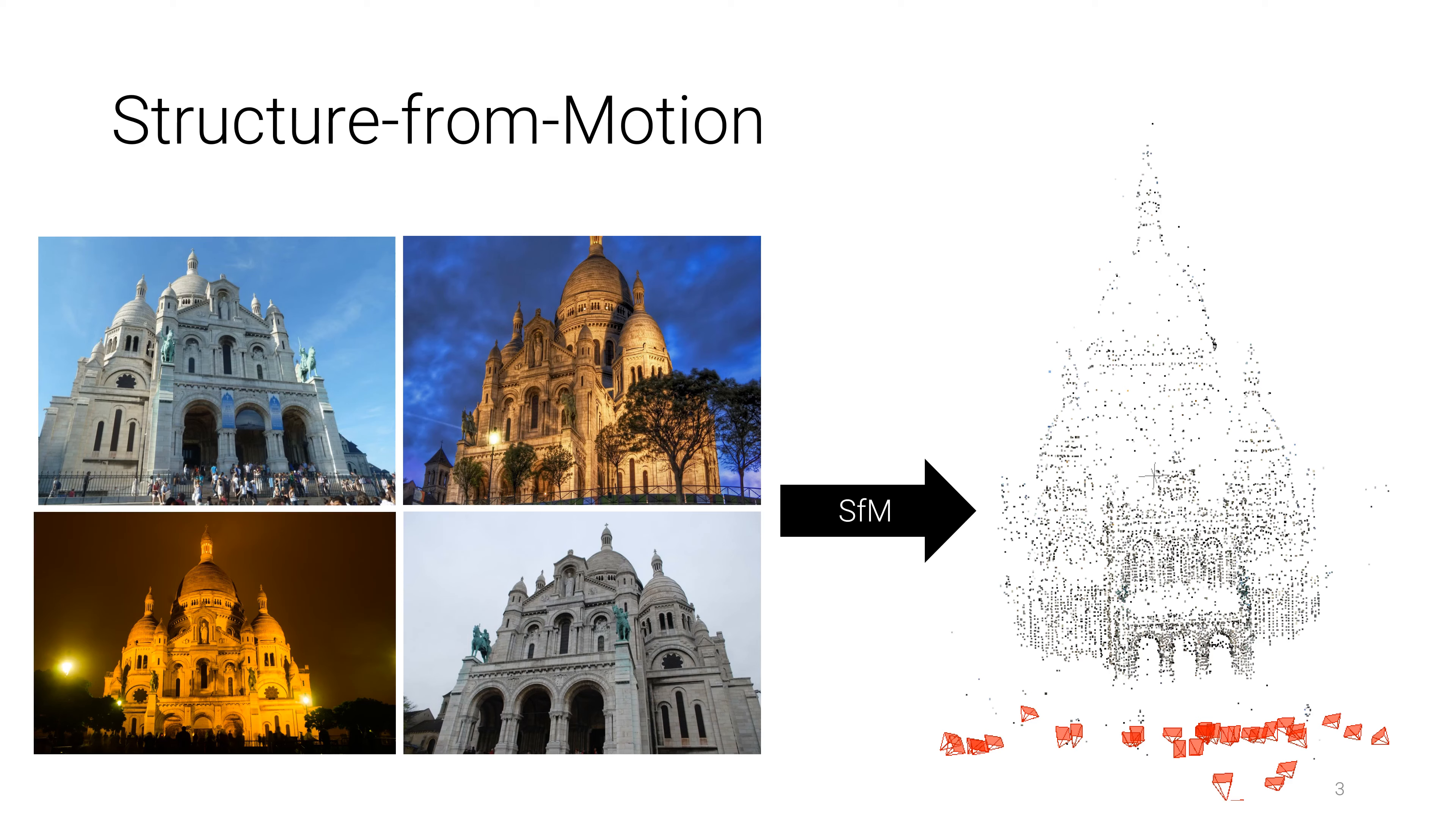Structure from Motion takes an unstructured set of images captured from various viewpoints and illumination conditions, recovers the camera poses and reconstructs a sparse 3D point cloud of the observed scene. Let's first review how this works.